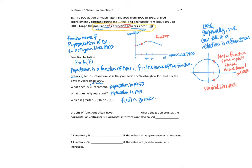Graphs of functions often have intercepts — where the graph crosses the horizontal or vertical axis. If it crosses the horizontal axis, those points are called x-intercepts, also called zeros. A graph can cross the x-axis in multiple places, giving multiple zeros. Where the graph crosses the y-axis is the y-intercept. Sometimes we call this the initial value because it's the value of the function when x is zero.